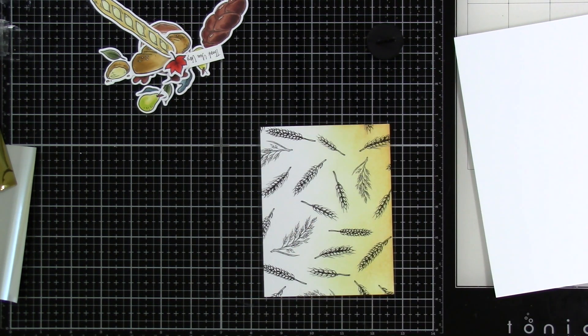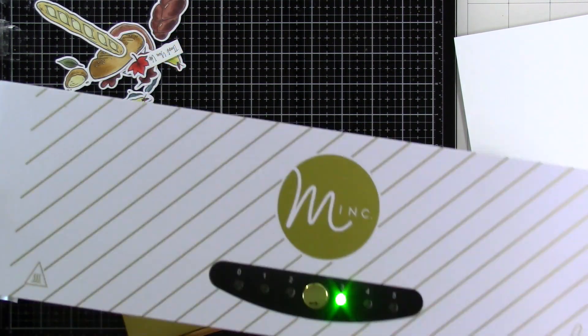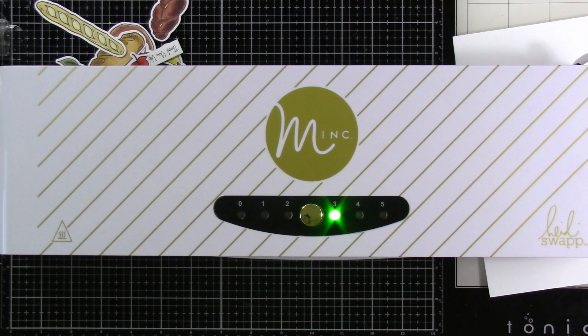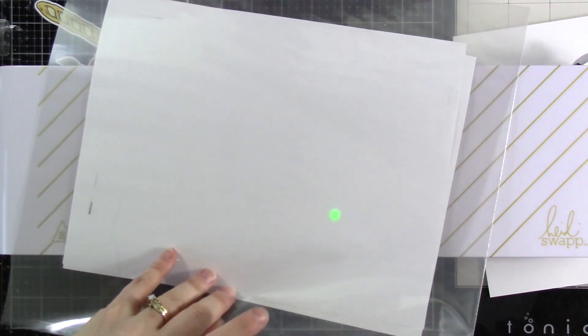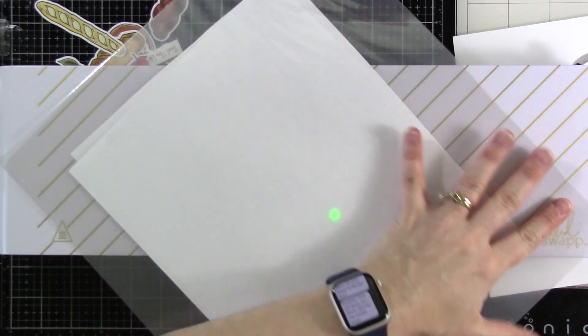Now there are a couple different kinds of foil out there. You want to make sure you're getting the right kind of foil. This deco foil is the one to use with the Minc machine or possibly use it with like a laminator.